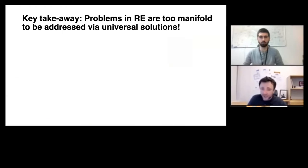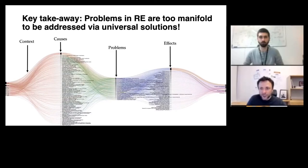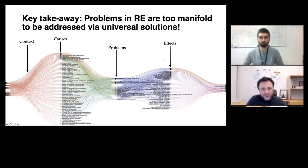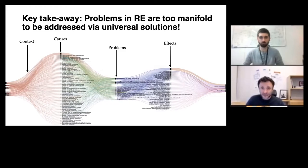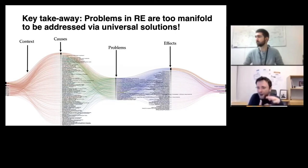One key takeaway from the whole initiative is that the problems in requirements engineering are far too manifold to be addressed via prepackaged and universal solutions such as agile. What you can see here is what we call an alluvial diagram — it shows the flow of all the problems, what causes them, and what the effects are, going far beyond project failure or success. It's not intended to be readable, but take away that whenever we talk about agile methods or agile requirements engineering, we tend to talk about solving specific problems. But these problems are only symptoms. What we need to talk about is the causes, the context factors, everything that leads to those problems. Once we see a problem, it's too late.